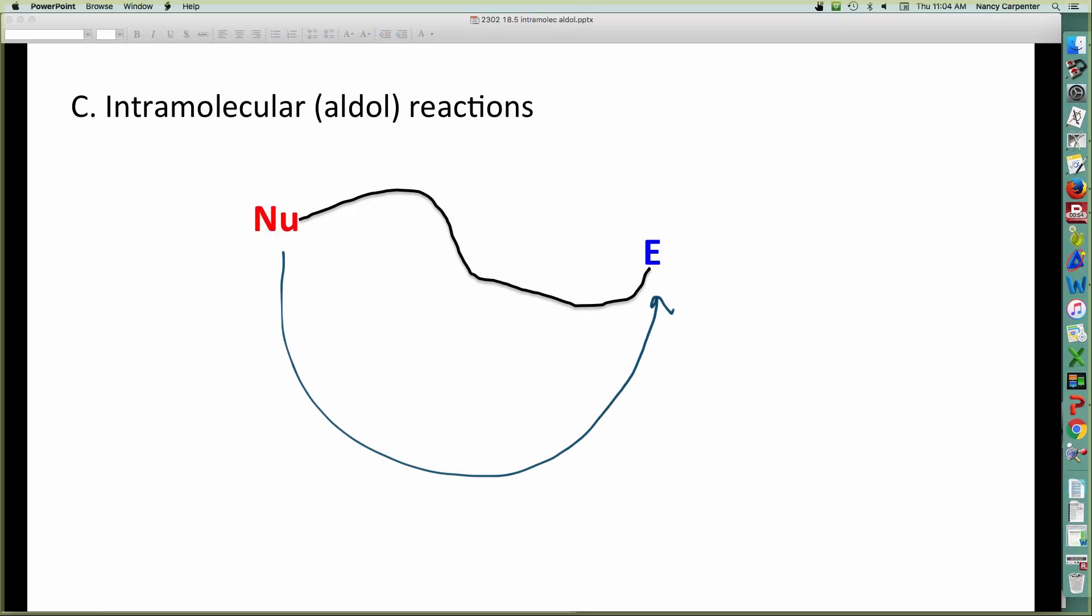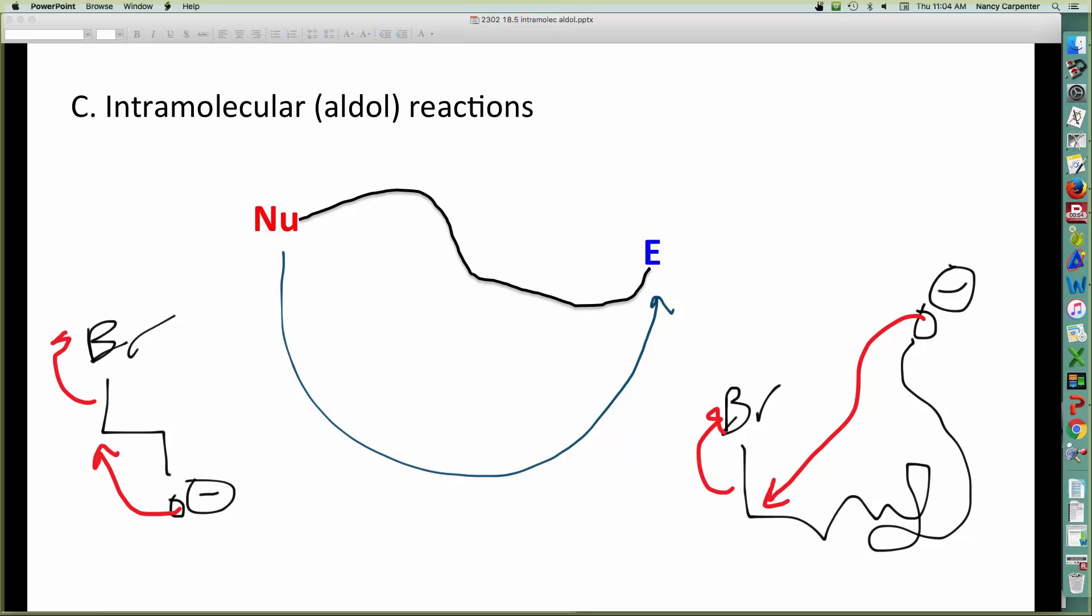There you go. And for example, what we've seen is, say, an alkyl halide electrophile and an alkoxide nucleophile tethered in the same molecule. Well, then you get a cyclic ether. And one that we've particularly seen quite a bit is formation of an epoxide that way from a bromohydrin. So we've seen intramolecular reactions for forever. So there's nothing new about that.